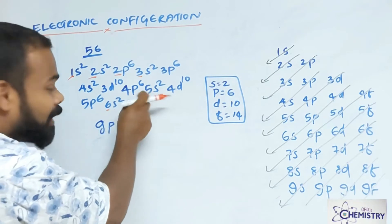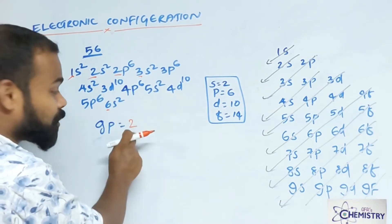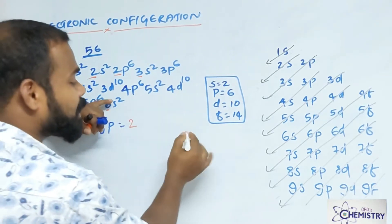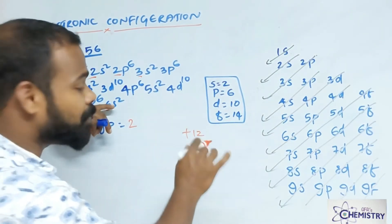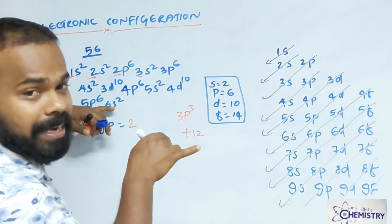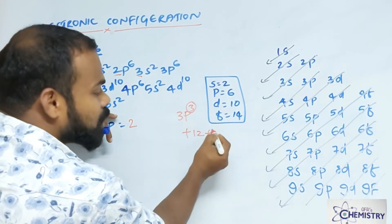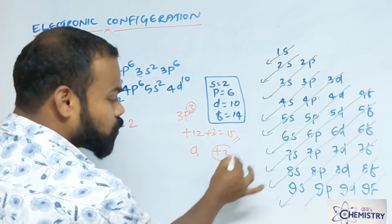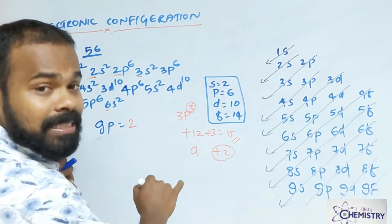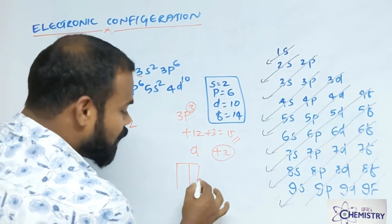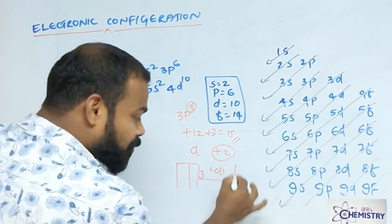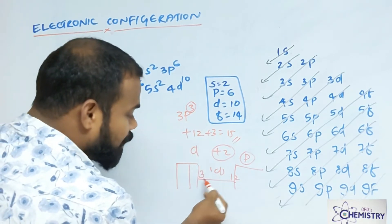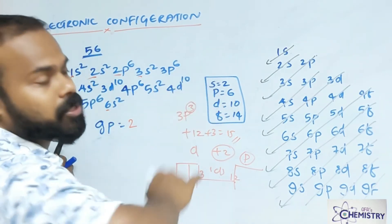How much electrons are there in that shell? Two electrons. That number gives the idea about the group. If the last subshell is s, write only that number. If it is p, add plus 12. For example, if last shell is 3p³: 12 plus 3 equals 15 — that is the group number. If it is in d, add plus 2. Why? In the periodic table, first two groups are s-block, from 3 to 12 is d-block, after 12 the p-block starts.